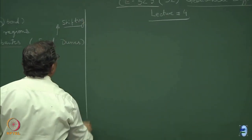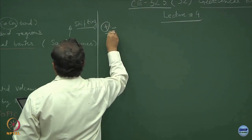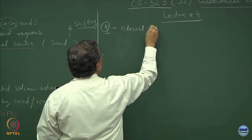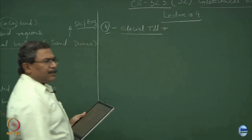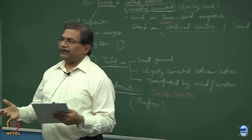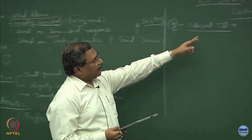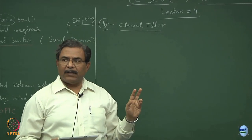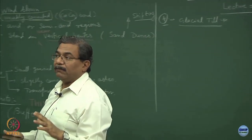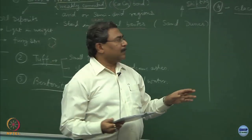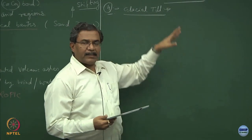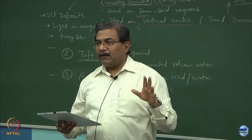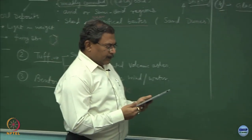The fourth transported soil type is glacial till. Tillage refers to the remains — and glacial till is the remains coming out of glacial activity. Avalanche is one of the reasons for causing glacial till. In mountainous regions like Manali and Rohtang Pass, a big problem is how to deal with these soils. This is also known as bouldery clay.